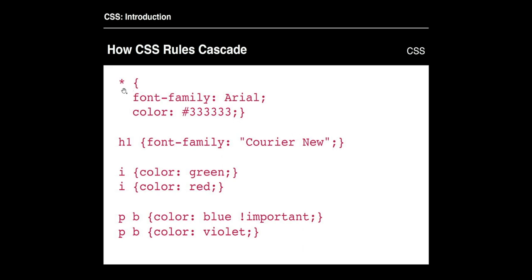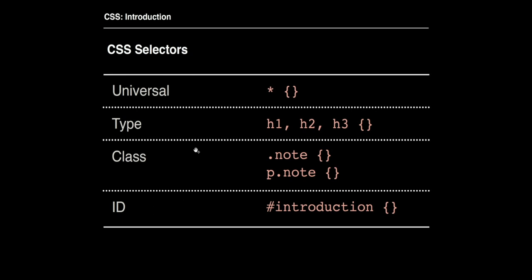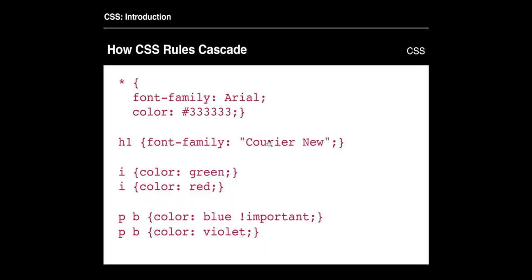Here's another example applying a font family and text color to everything, and then a Courier font family to H1. If we didn't do that, it would be Arial, but you can override values with other elements. For italics we're applying green, but there's a trick: everything gets read from top to bottom. So if italics is set to green first and then red second, red will win out over green because it comes after — so green will essentially be ignored.